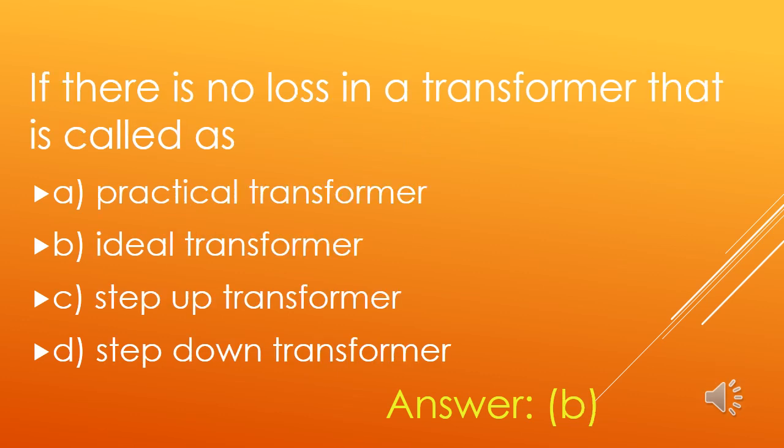If there is no loss in a transformer, that is called: A. Practical Transformer, B. Ideal Transformer, C. Step-up Transformer, D. Step-down Transformer. There is no loss in an ideal transformer, but there is always some loss in a practical transformer. So, practically an ideal transformer is not possible. Option B is the right answer.